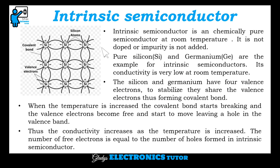So first, let's see about the intrinsic semiconductor. Intrinsic semiconductor is a chemically pure semiconductor at room temperature. It is not doped — impurity is not added. The pure silicon and germanium are examples of intrinsic semiconductors.